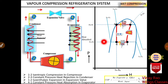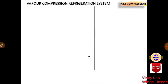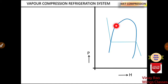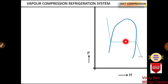We will start step by step. This is the model diagram and this is the P-H chart. On the Y-axis there is pressure, and on the X-axis there is enthalpy. This is the standard curve for the P-H chart. This is the critical point, and from the critical point this is the saturated liquid line and this is the saturated vapor line.